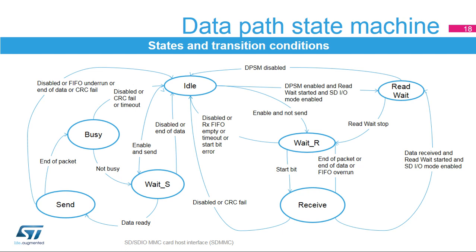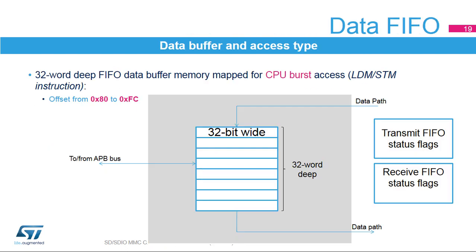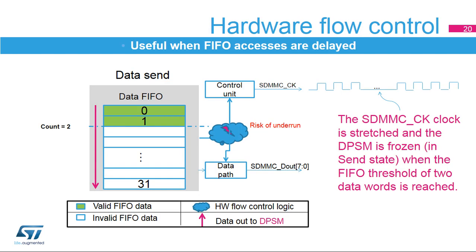A read-wait state is an SDIO-specific operation to stall the transfer in order to execute other commands or internal operations. It can be reached from the receive state while the transmission is ongoing or from the idle state. When the firmware requests a read-wait-stop operation, the DPSM moves to the wait R state and waits for a start bit from the SDIO device. The FIFO is a 32-bit wide, 32-word deep data buffer mapped on the APB domain. Dedicated receive and transmit FIFO status flags are available to ease firmware implementation. The hardware flow control function is used to avoid FIFO underrun when DPSM is in TX mode and overrun when DPSM is in RX mode errors.